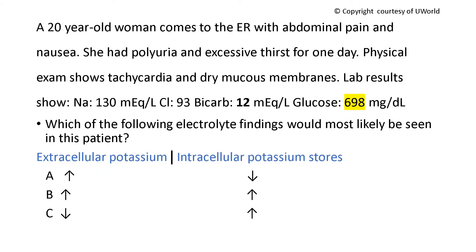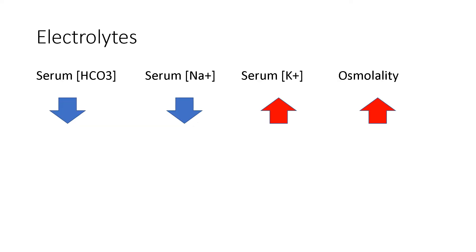So now you know that this 20-year-old woman has increased extracellular potassium with decreased intracellular potassium stores that are being depleted as fluid shifts outside cells and as it's lost in urine. The major electrolyte disturbances in DKA: because this is an anion gap metabolic acidosis, it's consuming the body's buffer system — the bicarb — so bicarb will be low, consumed by all these keto acids as the body tries to buffer them.